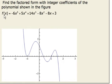The first step in this problem to make life a little bit easier is to factor off a negative 1. So I get 6x to the 5th minus 5x to the 4th minus 14x to the 3rd plus 8x squared plus 8x minus 3.